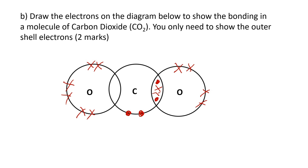Now the left hand oxygen atom has also got six electrons on the outer shell so it needs two more. So once again we're going to move two of the carbon atom electrons into the sharing zone. And if carbon is sharing two with oxygen, the oxygen atom is going to share two electrons back.